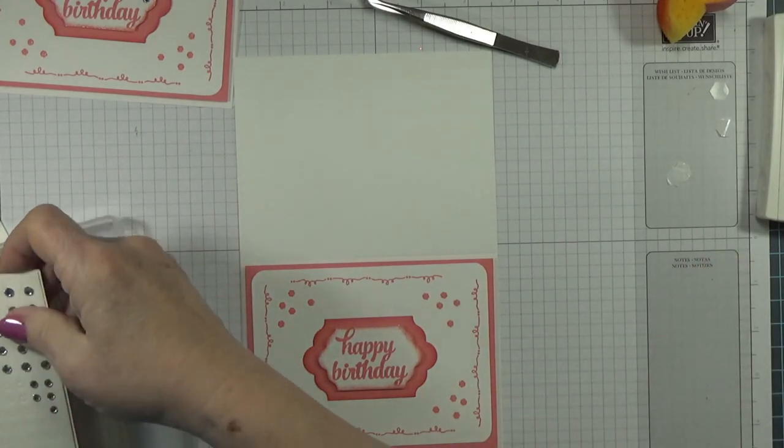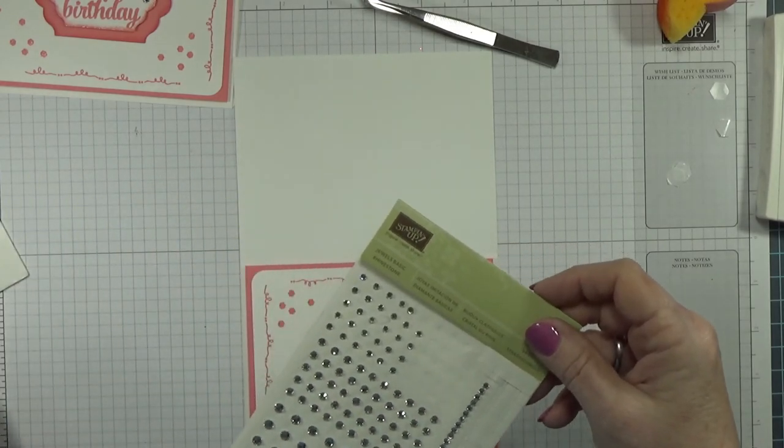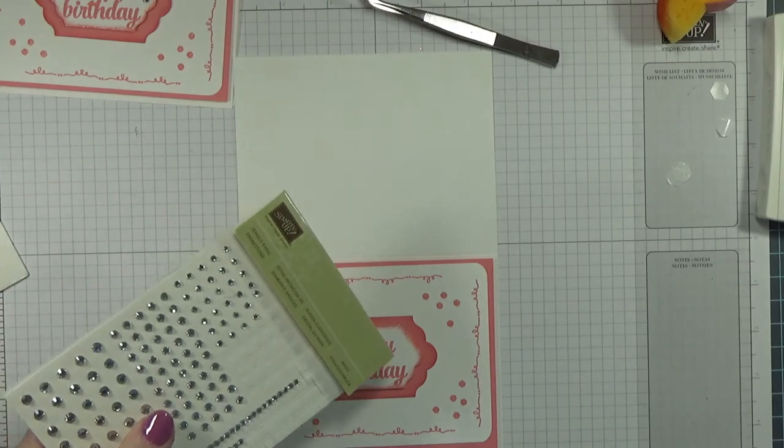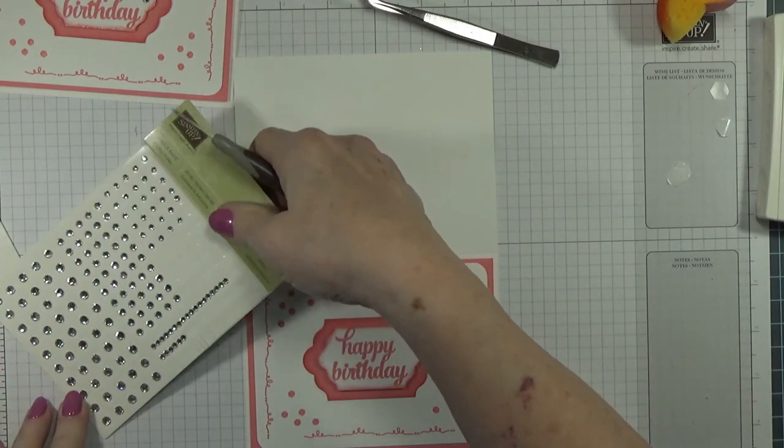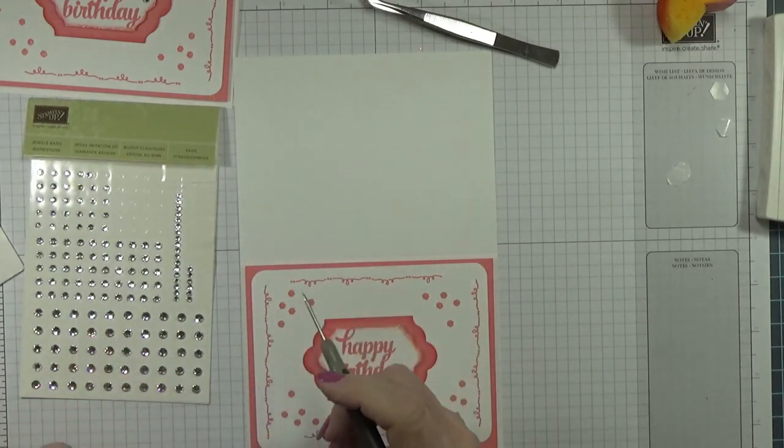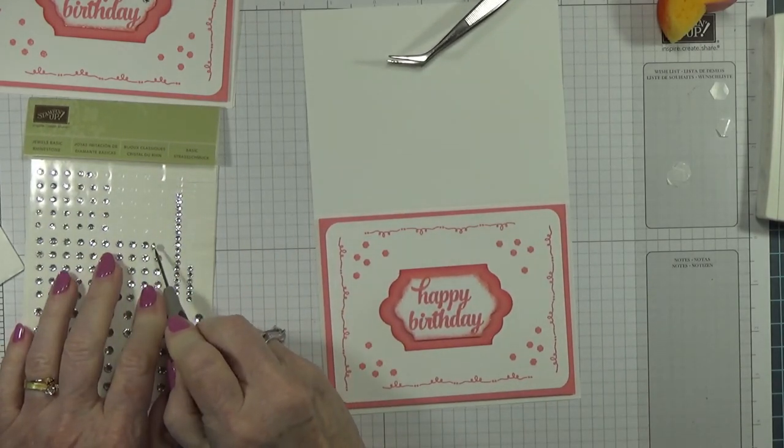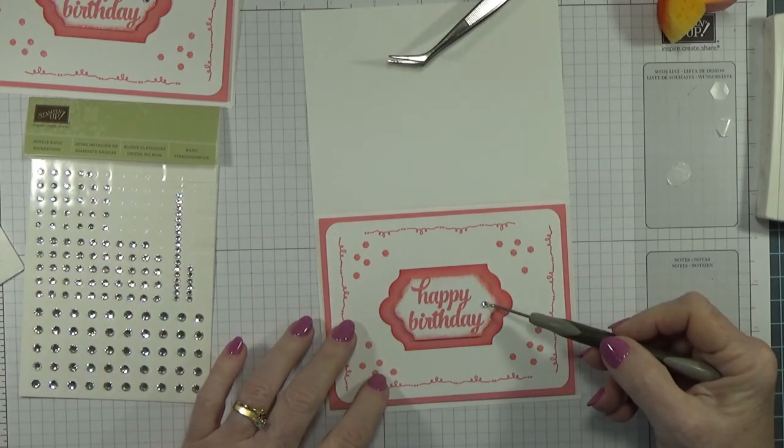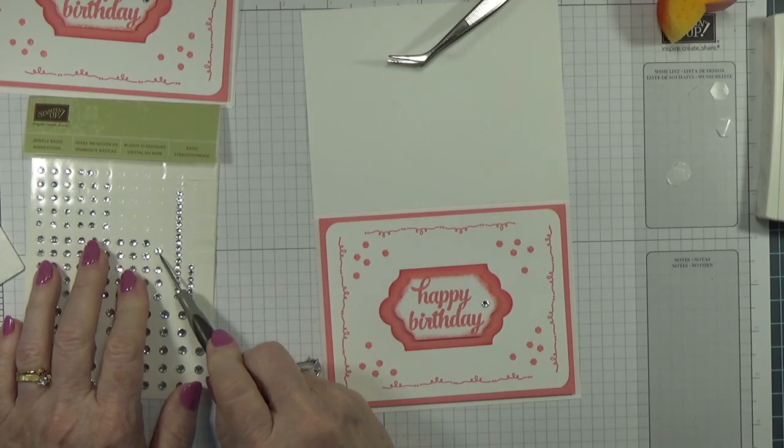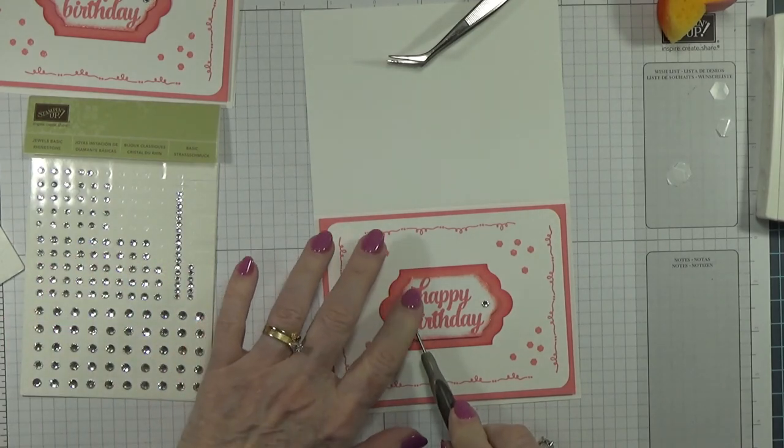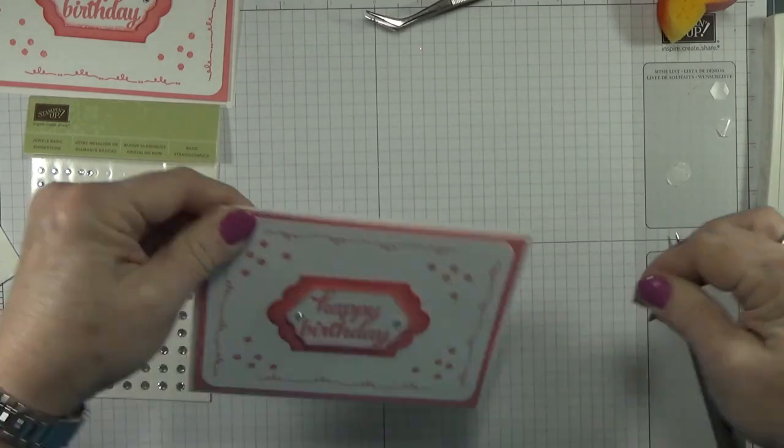Now I am going to put rhinestones on it. I'm going to use these sides right here. I'm just going to put it right here and right there, and that's it. I mean that's how simple this card was.